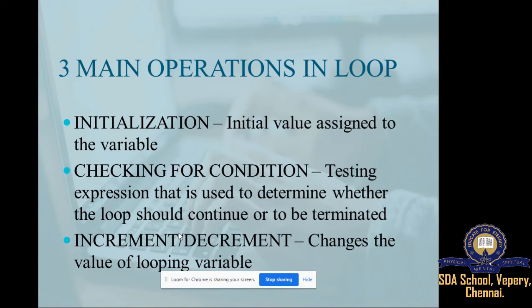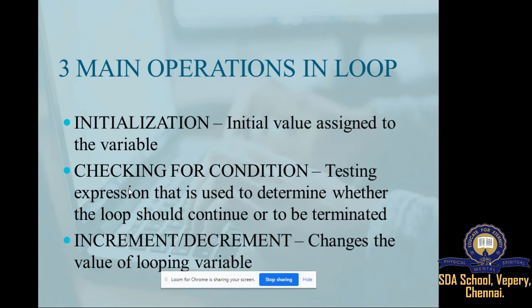The third operation is the increment and decrement operator — plus-plus or minus-minus. It increases the value by one or by whatever you specify. For example, i = i + 2 means you are incrementing by two numbers. It changes the value of the looping variable. Only these three things to remember: initialization, checking for condition, and increment/decrement. I will show how each is represented in the different loop types.